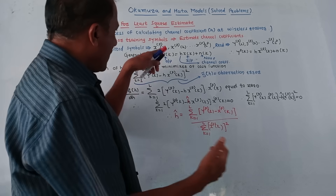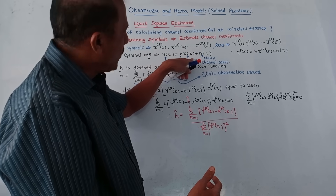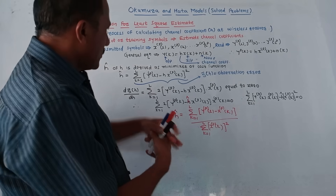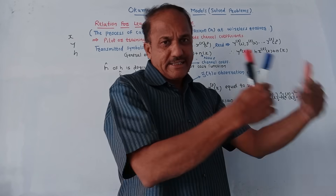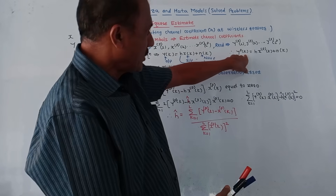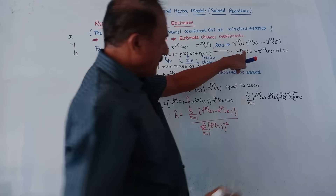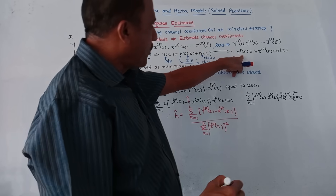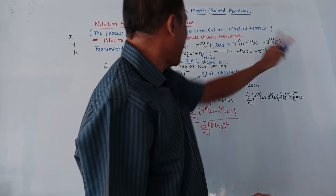Since noise is added, y(k) cannot equal h · x(k). So this is the general expression. For pilot symbols, the corresponding notation changes slightly — the letter 'p' is used to represent the equation for pilot symbols. So the pilot equation becomes: yp(k) = h · xp(k) + n(k).